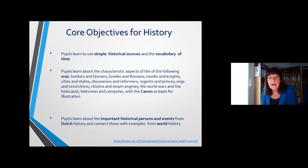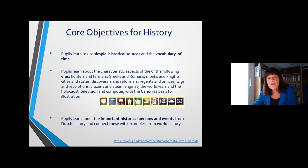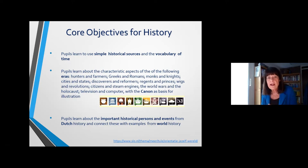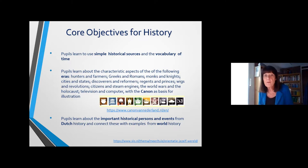Each era has two characteristics — for example, the spread of Christianity in the time of monks and knights, and the multicultural society in the time of television and computers. These 10 eras are symbolized with icons, which you see here. For the illustration of these characteristic aspects, we have the Dutch Canon I told you about before, which contains 50 historical persons and events of Dutch history — for example, William of Orange, or the construction of the first railway in the Netherlands in the time of citizens and steam engines.